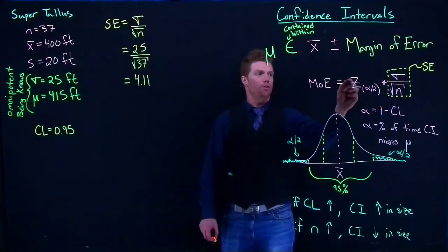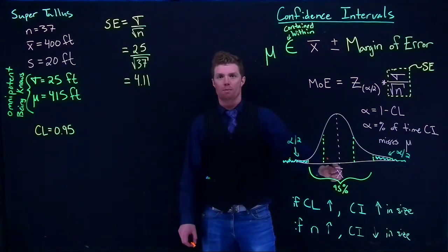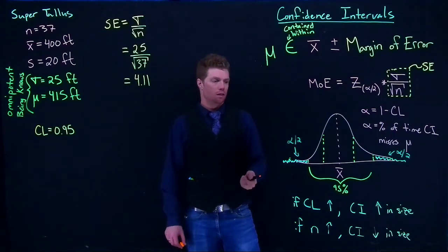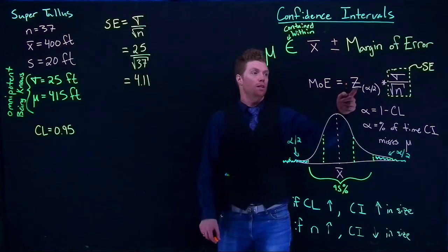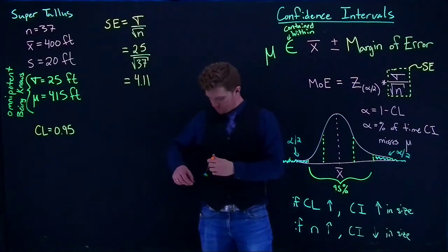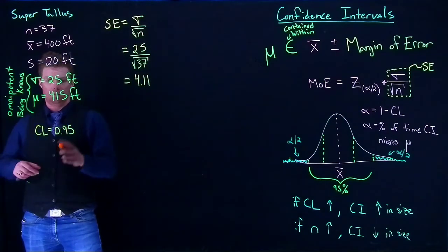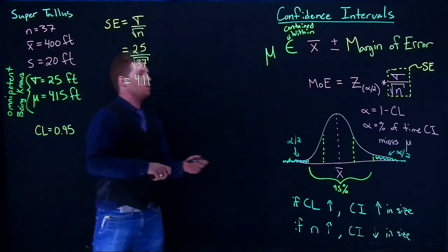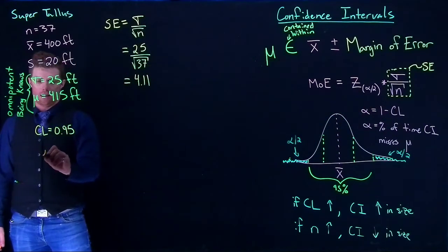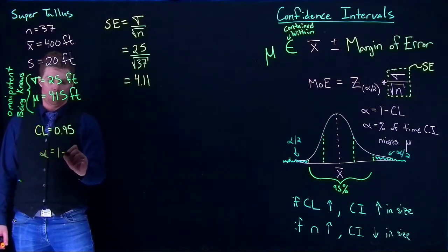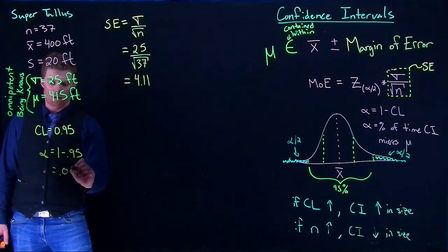And when you actually do the calculation for this guy it's going to be 4.11. Alright so there's our standard error. We've got that part down. The next thing that we need to do is we need to figure out z. And before we figure out our z, remember the number of standard deviations away from the mean that we're willing to be, that we want for our confidence interval is we need to figure out what alpha and what alpha divided by 2 are.